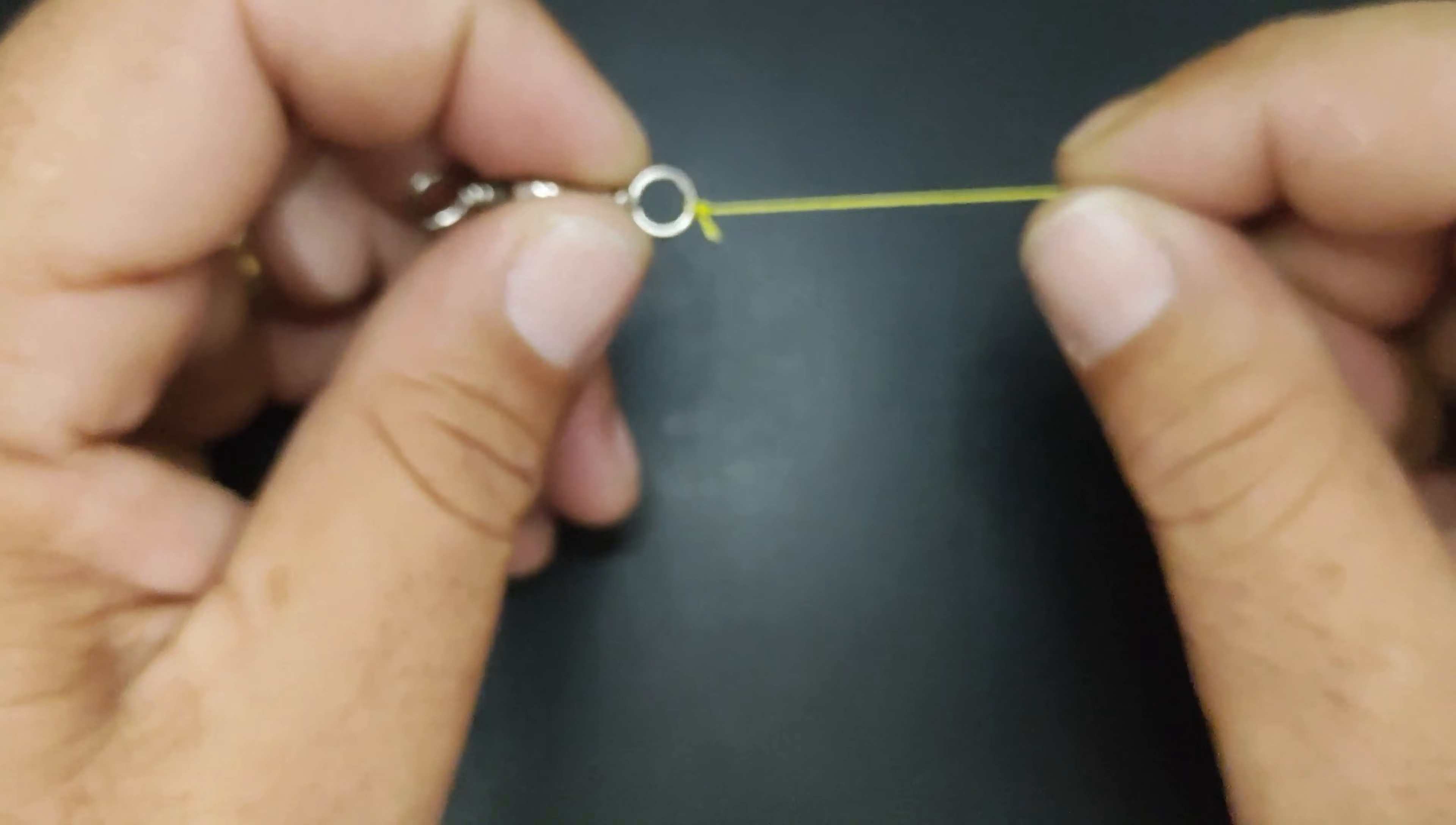Aí você vai pegar a ponta morta e vai passar por dentro desse lacinho que ficou aqui no snap. Tá vendo ali o lacinho? Bem aqui. Passa por dentro aqui e volta de novo por dentro aqui. Por dentro.